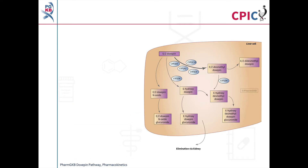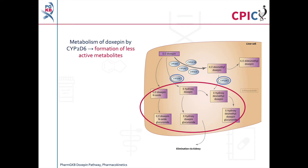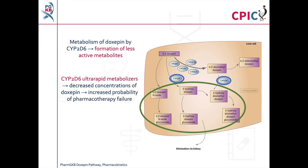Doxepine is metabolized by CYP2D6 to form less active metabolites. In CYP2D6 ultra-rapid metabolizers, metabolism of doxepine is increased. This reduces the concentrations of doxepine in the body, which increases the probability of pharmacotherapy failure.